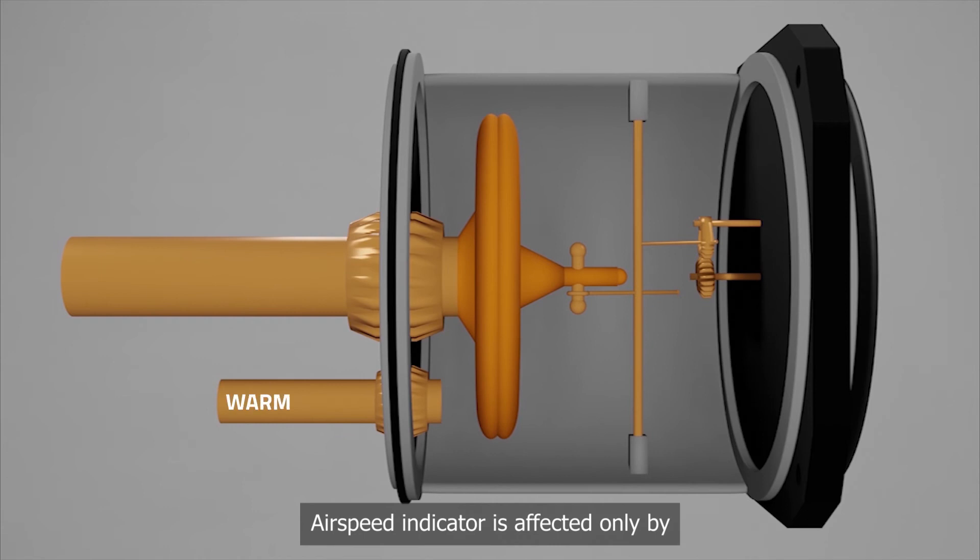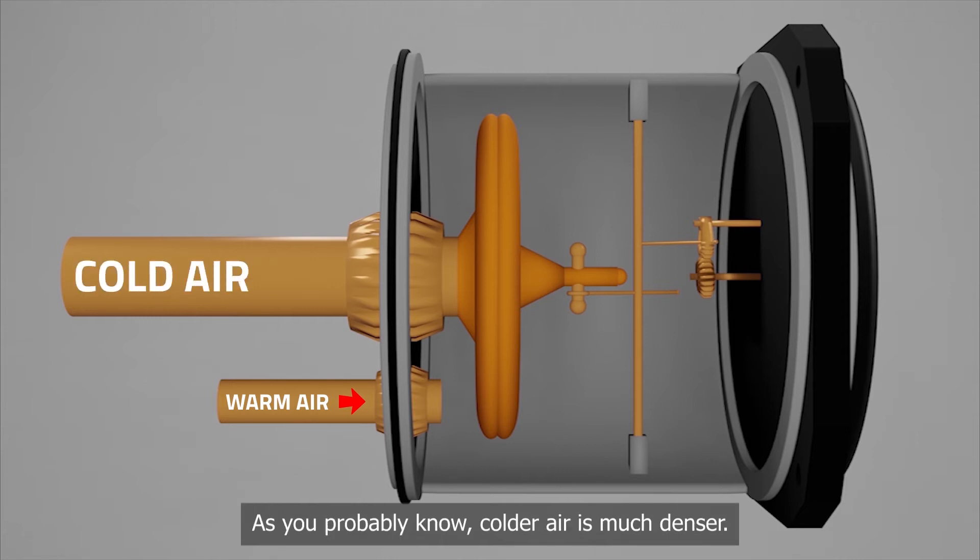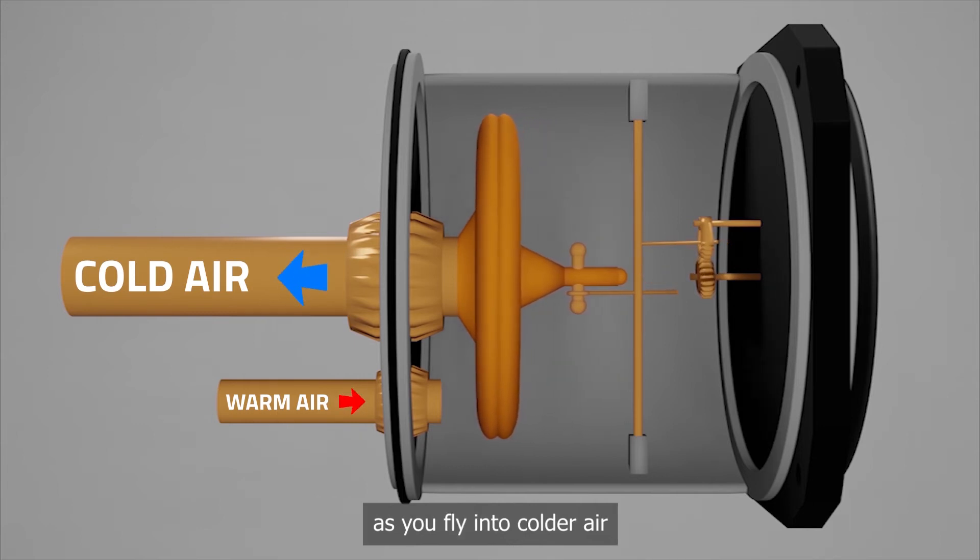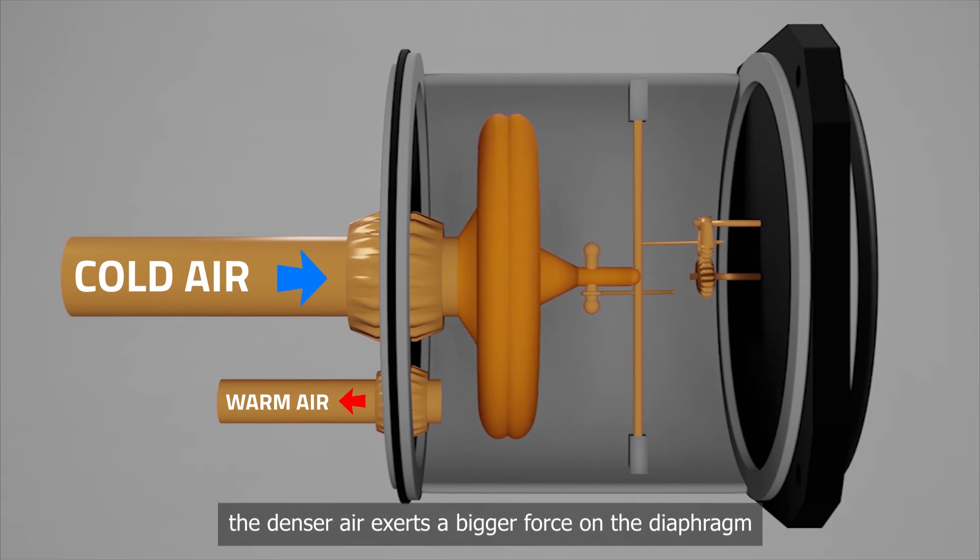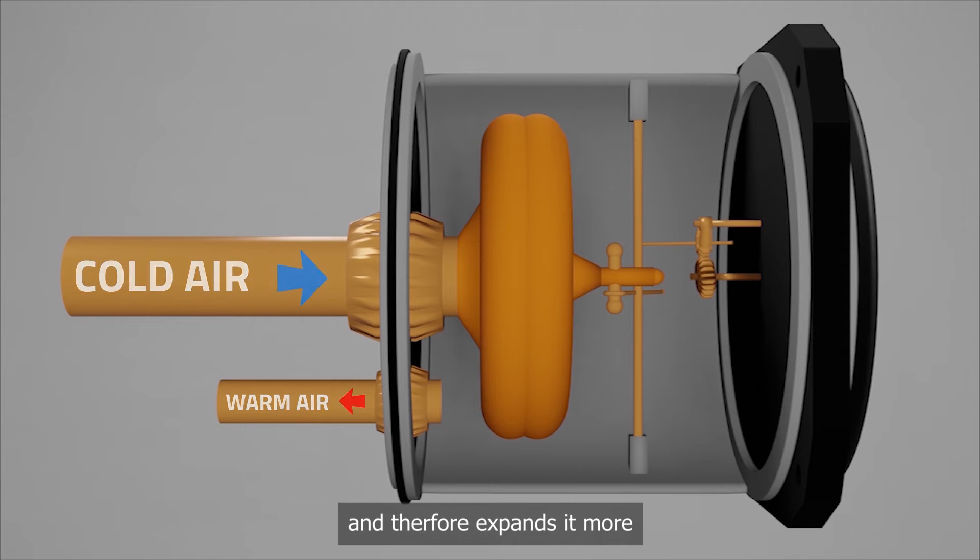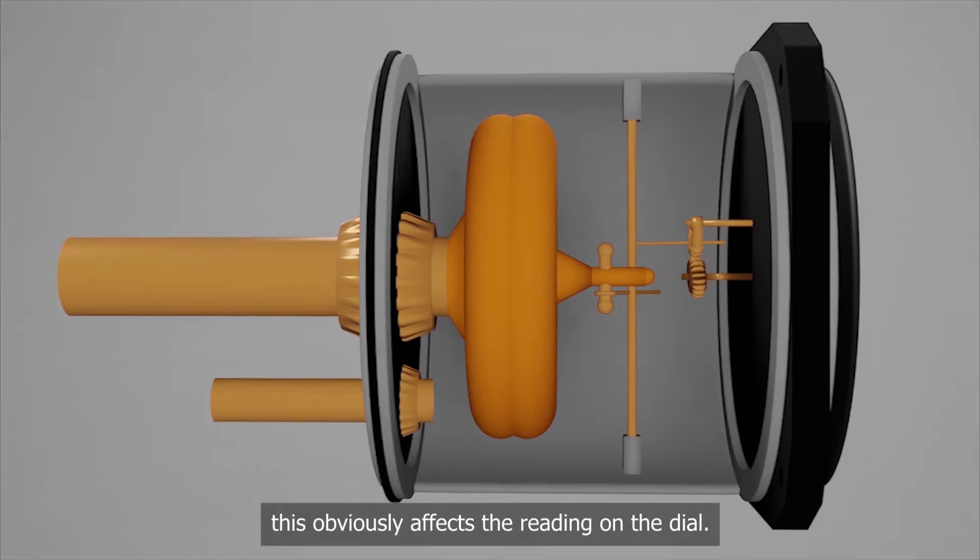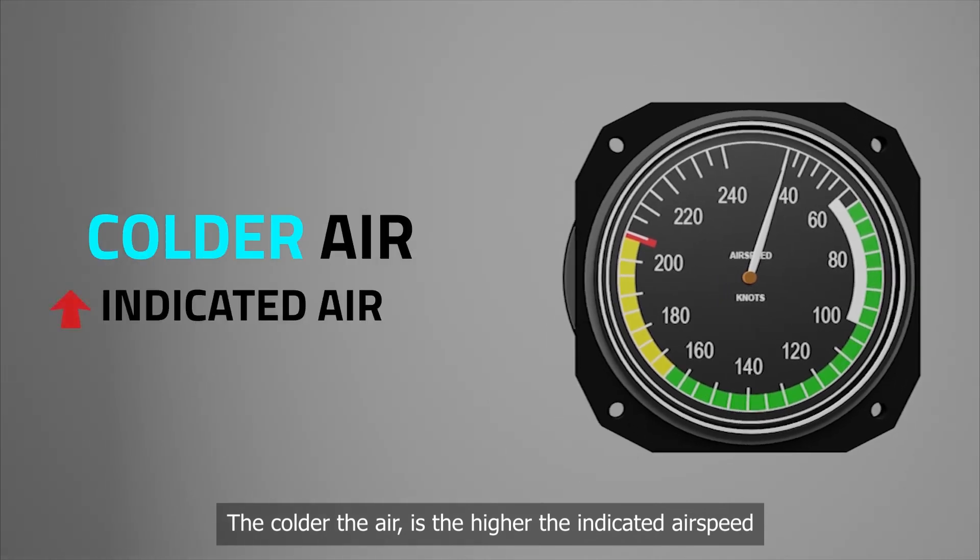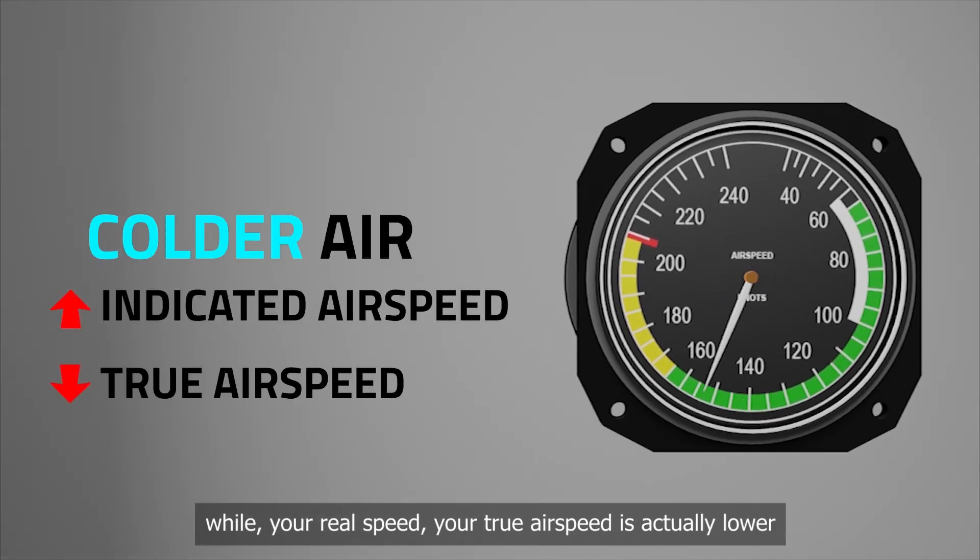The airspeed indicator is affected only by changes in temperature and not in pressure. As you probably know, colder air is much denser. And as you can see from the animation, as you fly into colder air, the denser air exerts a bigger force on the diaphragm and therefore expands it more. This obviously affects the reading on the dial. The colder the air is, the higher the indicated airspeed. While your real speed, your true airspeed, is actually lower.